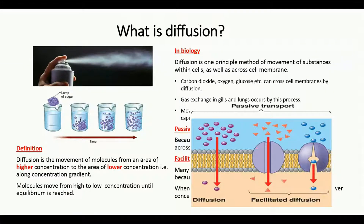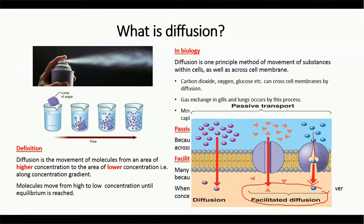In facilitated diffusion, these transport proteins help in the movement of molecules present in higher concentration on the outside, allowing them to move through the membrane from higher concentration to the lower concentration inside the cell. This is facilitated diffusion, because it is facilitated by the transport proteins.